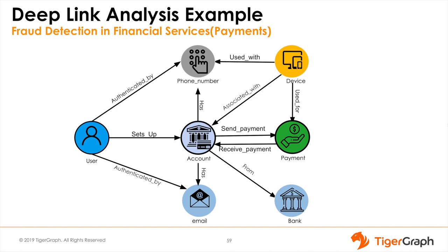Deep link analytics is the ability to traverse and analyze connecting paths that are at least three hops deep in large graphs. The deeper you traverse, the more information you uncover. Let's consider an example from financial services to understand how deep link analytics is used for fraud detection.